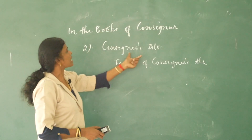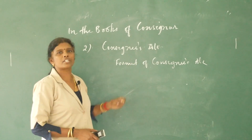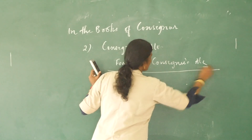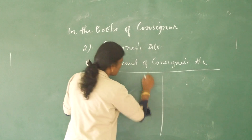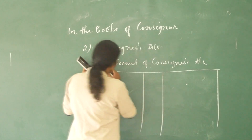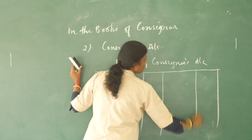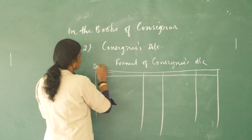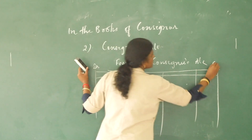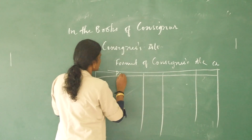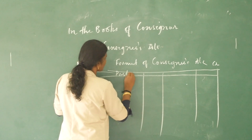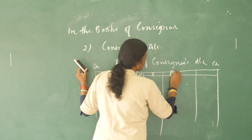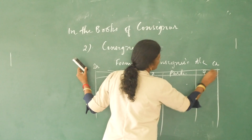In the books of consigner, the second account is the consignee's account. Consignee's account is a personal account. It is prepared in T-shape format with particulars and rupees columns on both sides.